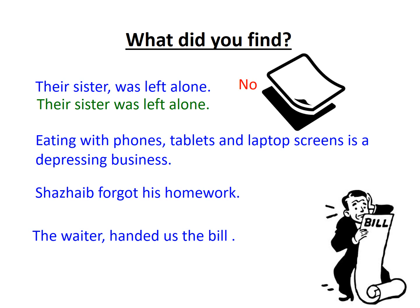This next example is slightly more complex: 'Eating with phones, tablets and laptop screens is a depressing business.' The use of the comma here is because we have a list of items that it's depressing to eat with. We are not separating the subject from the verb because the subject is the idea that eating with these items is depressing. Because there is a list, it is important that the first item is separated by a comma. So actually, this is correct.